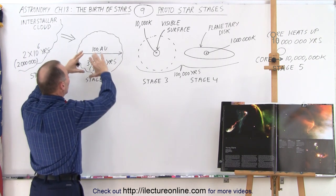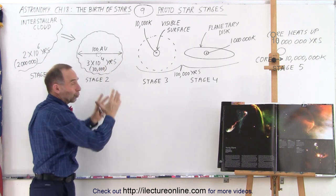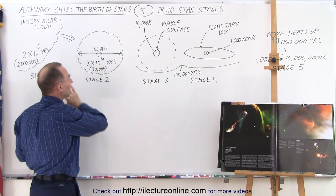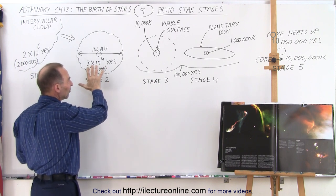And that process where we have something now the size of our current solar system is what we call stage two. The process there takes about 30,000 years to go through.